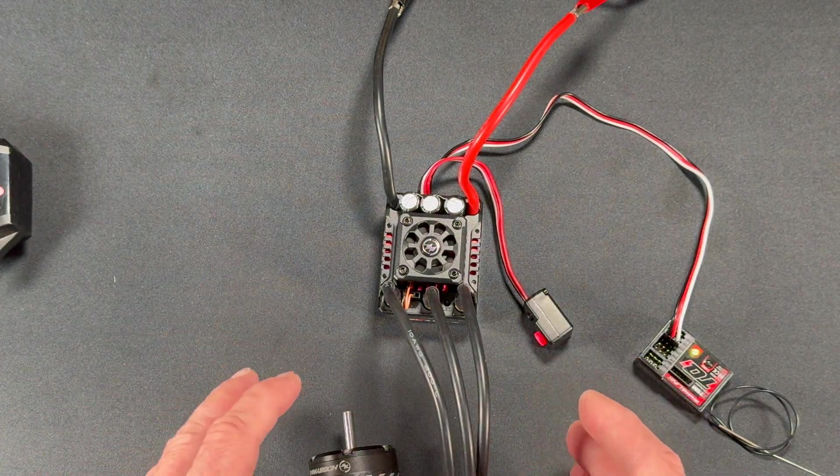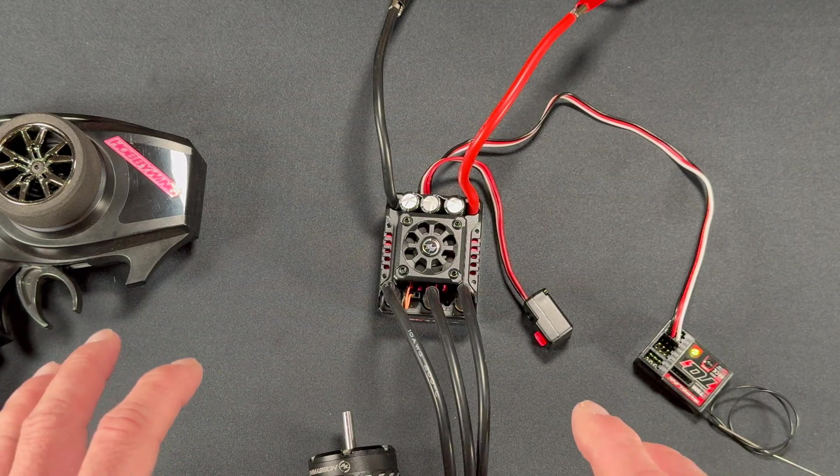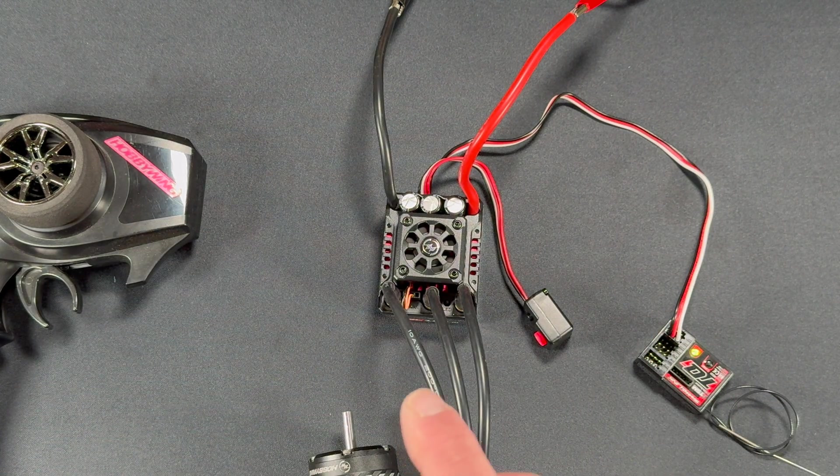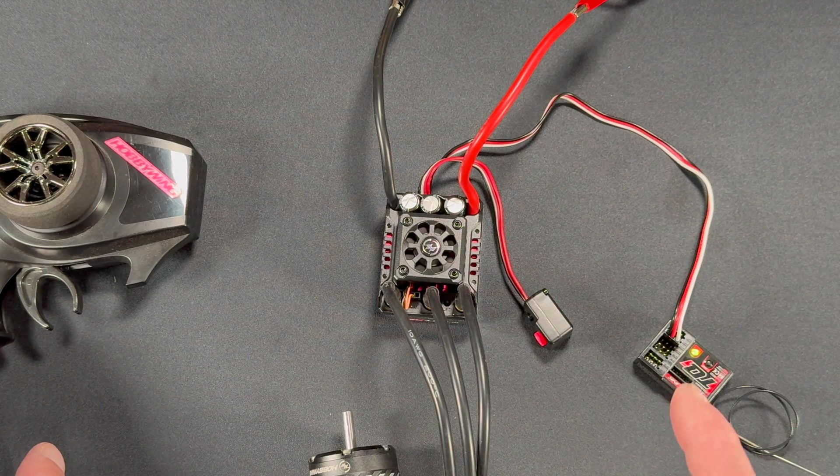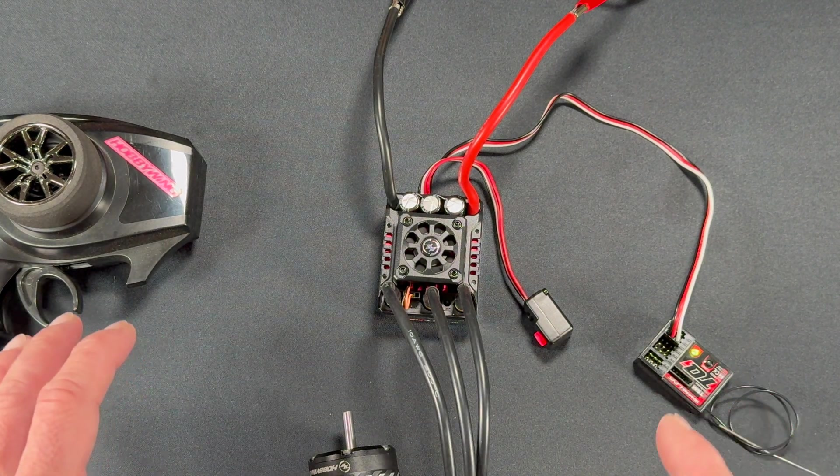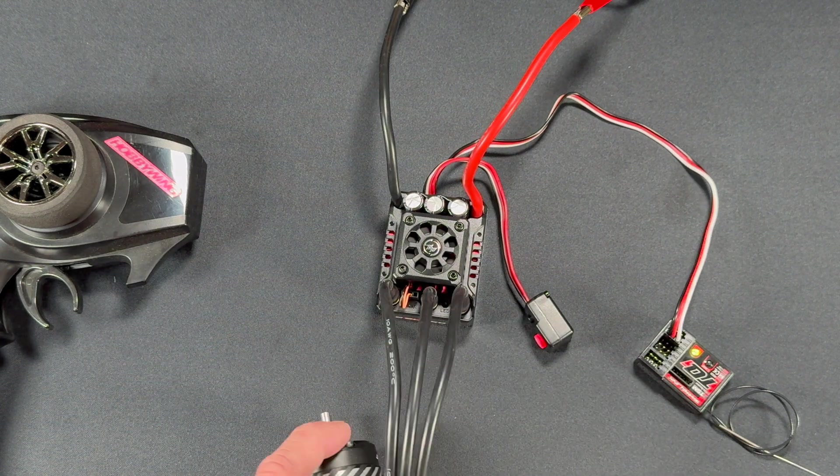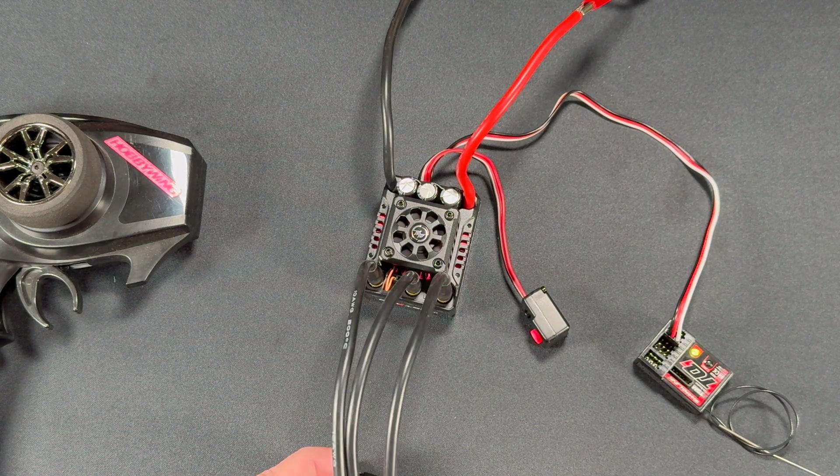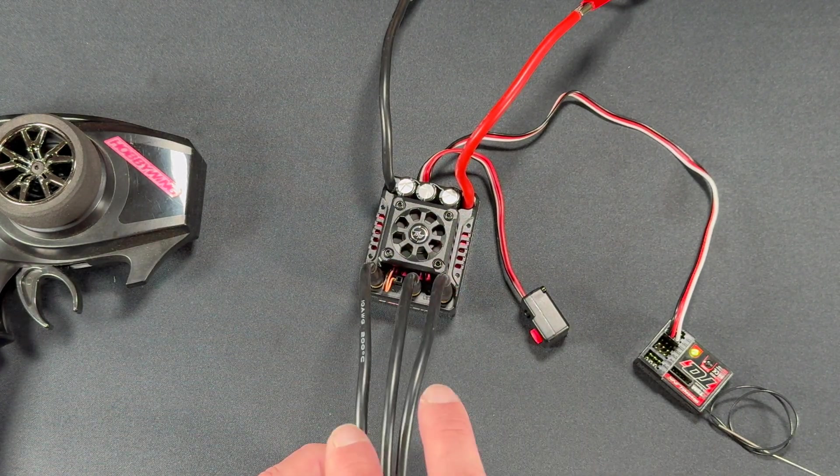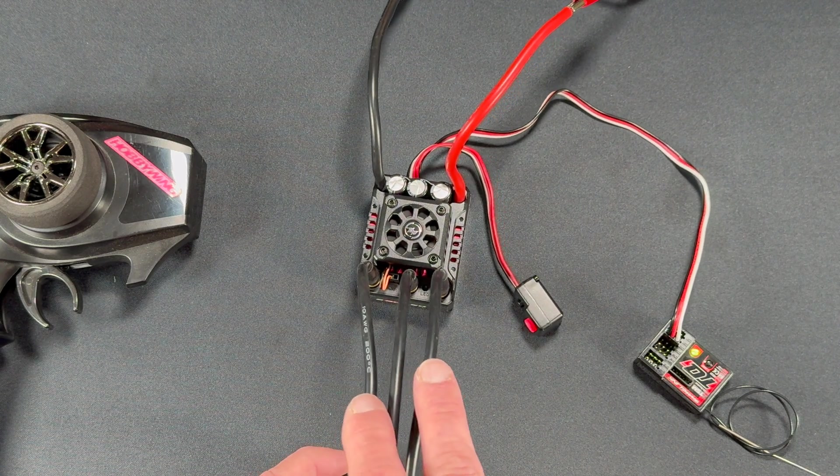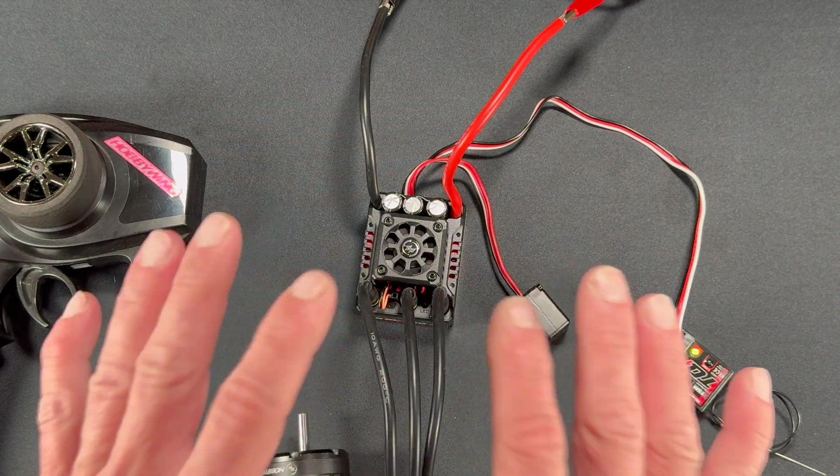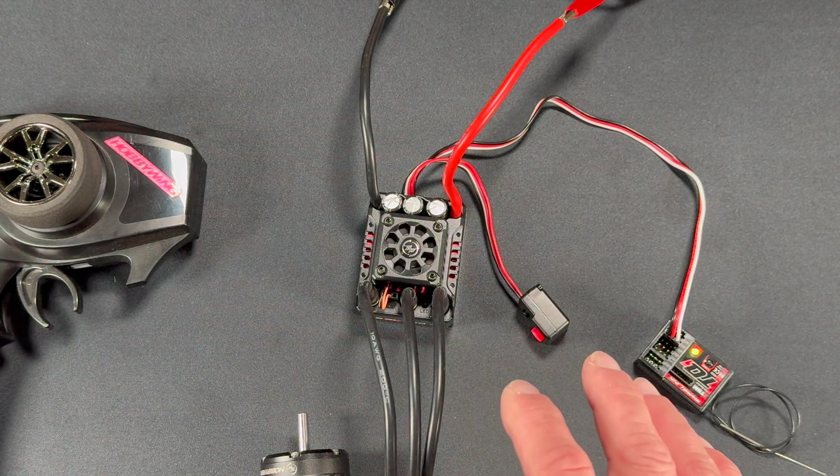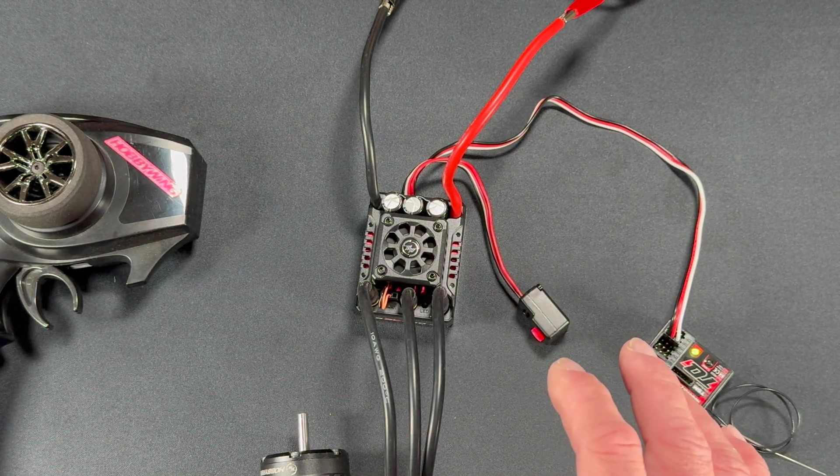And then on a sensorless setup, one thing to keep in mind is when you do calibration, you're going to calibrate it and then test the vehicle to see if throttle makes the vehicle go forward. If it does not, you can switch the outside two motor wires. On the motor itself, you want the middle wire of the motor going to the middle wire of the speed control. And you can use the outside two to dictate the rotation of the forward, if you will. That only applies to sensorless setups.